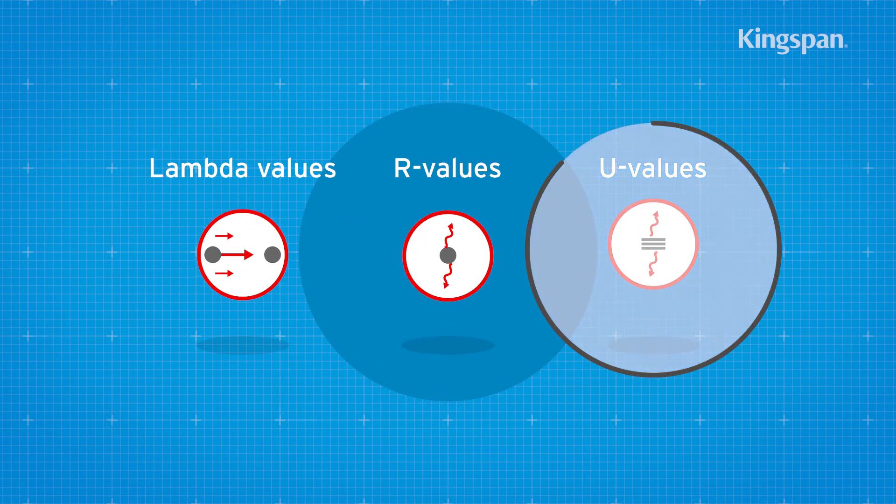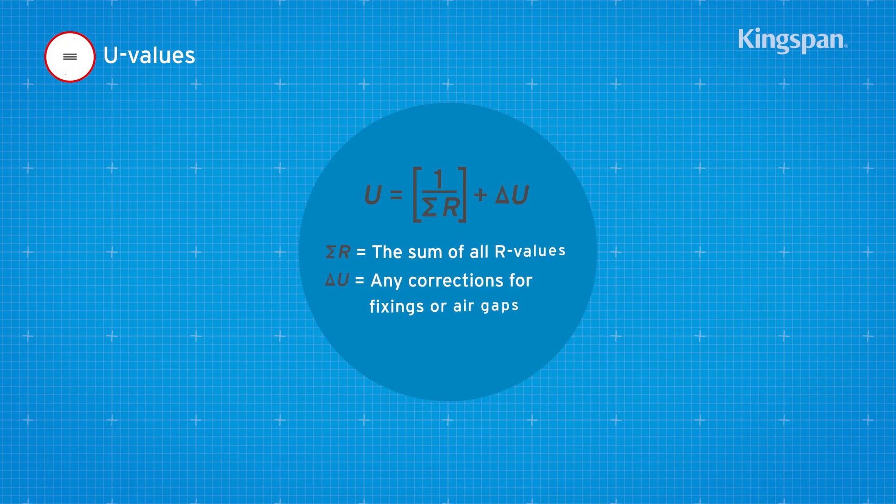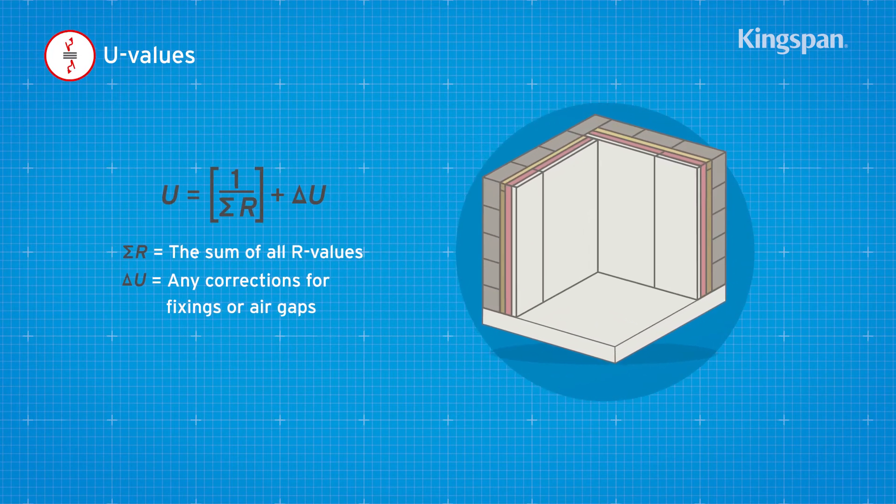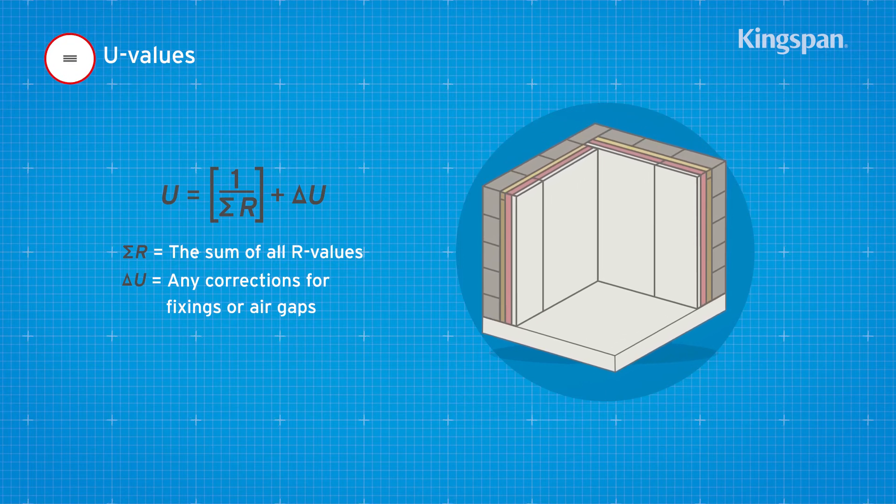What about the U value? This is the sum of the thermal resistances of all the layers that make up a building element, including any adjustments for fixings or air gaps.